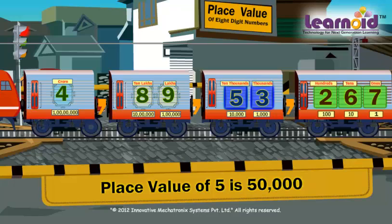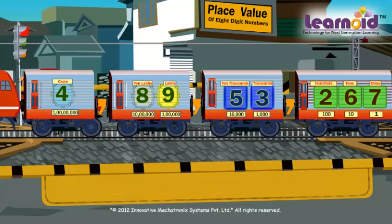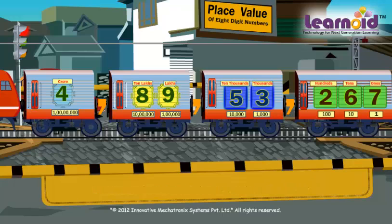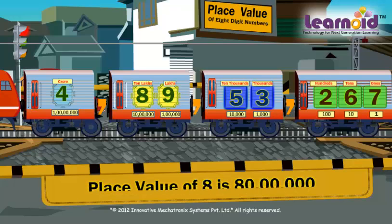Number 5 is in the ten-thousands window. Its place value is 50,000. Number 9 is in the lakhs window. Its place value is 90,000. Number 8 is in the ten-lakhs window. Its place value is 80 lakh.